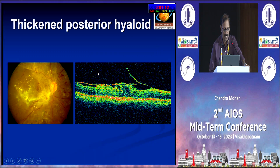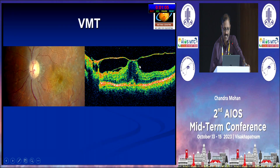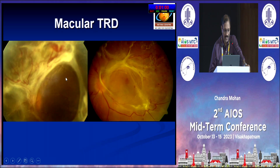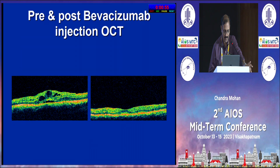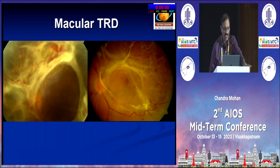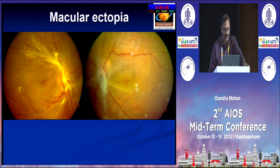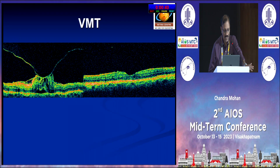Other maculopathies include thickened posterior hyaloid with irregularity of the macula, epiretinal membrane causing thickening of the fovea, and cystoid macular edema due to thickened posterior hyaloid seen clinically as CME — all caused by fibroglial tissue proliferation. For all pre-retinal and vitroretinal changes, the treatment is vitrectomy. This is a classic example of CME which resolves after vitrectomy.